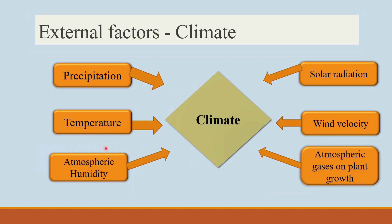Coming to the external factors, the first one is climate. In climate, there are some factors like precipitation, temperature, atmospheric humidity, solar radiation, wind velocity, and atmospheric gases on plant growth.